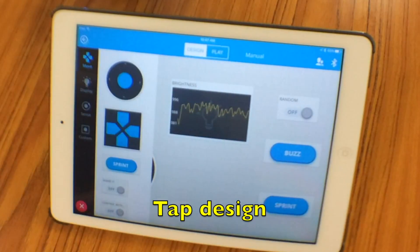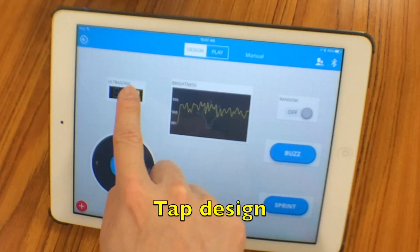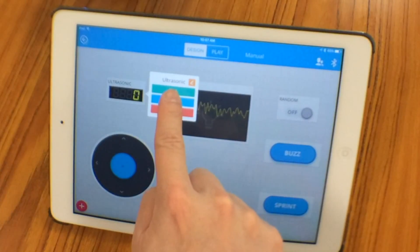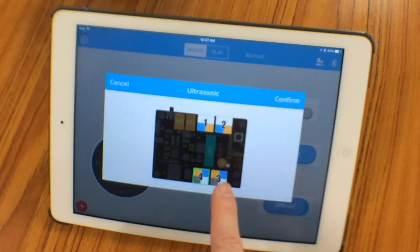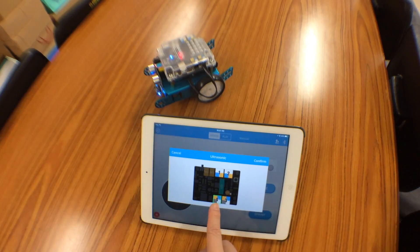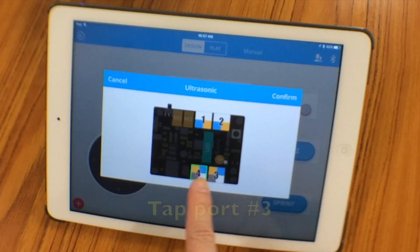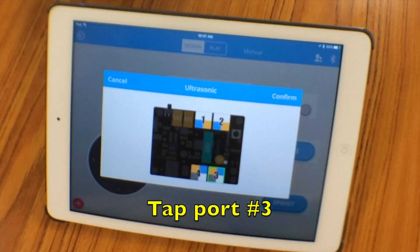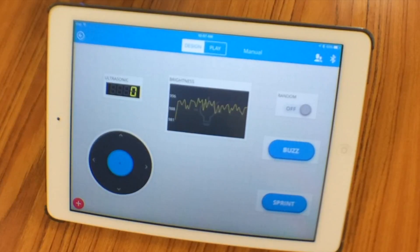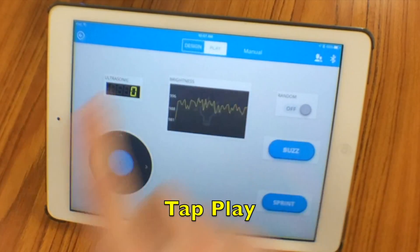So we can tap design, and then tap on the ultrasonic display. Change the port to number three. Now you can see that this is at number four. Tap number three, confirm, and then go back to play.